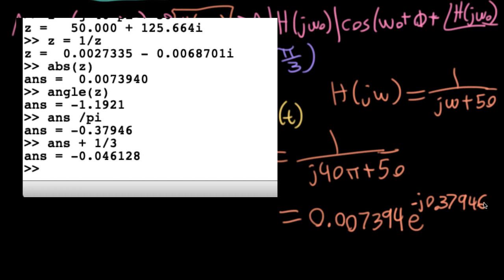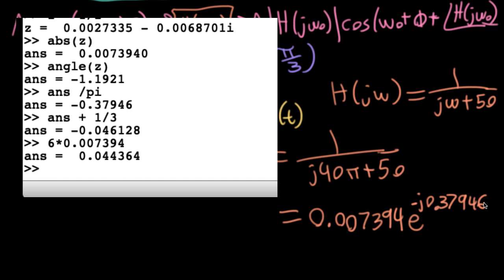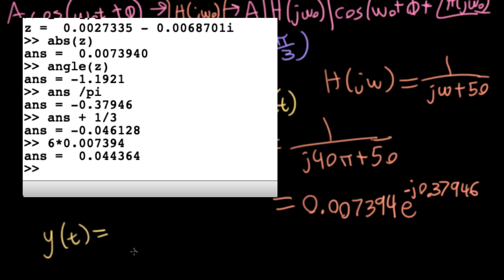And then I'll take the amplitude going in, which is six, and multiply it by the magnitude, which is this 0.007394. And I get a really tiny number, like 0.044. So the output has magnitude 0.044, I'll round it there, times cosine 40 pi t. The frequency does not change. And then I'll have a phase of minus 0.38, let's round it there, times pi.